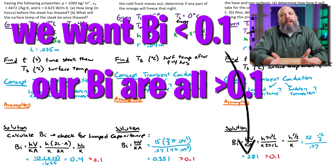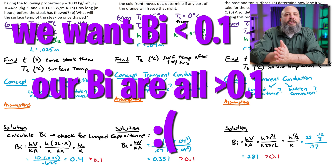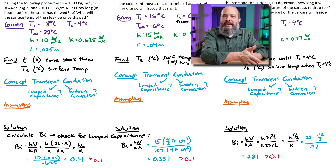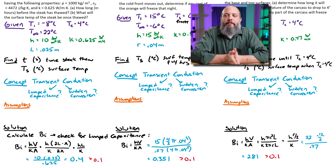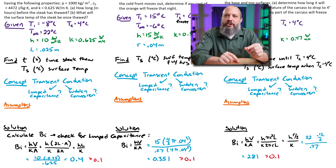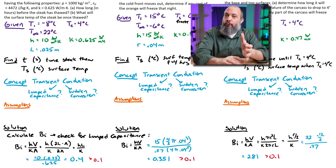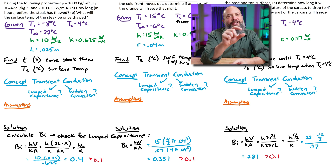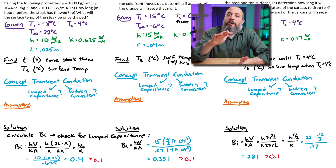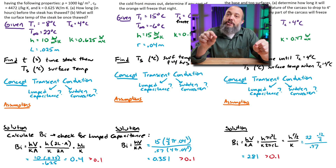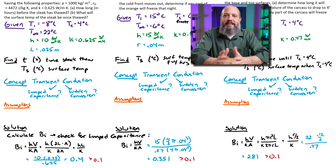All three Biot numbers are greater than 0.1, which is the cutoff threshold. Small Biot numbers allow you to assume lumped heat capacity, meaning center and surface temperatures can be assumed the same — that happens when you have a really large K or a really small H. Unfortunately, in this case we have large Biot numbers, which means surface and centerline temperatures are not the same. So we are not able to use the lumped heat capacity method.